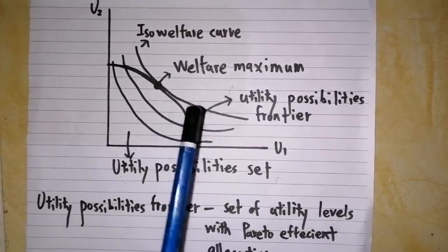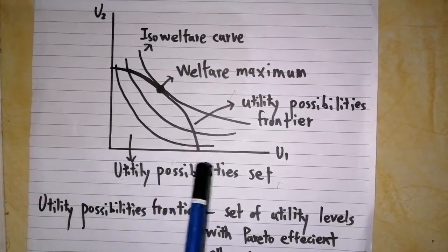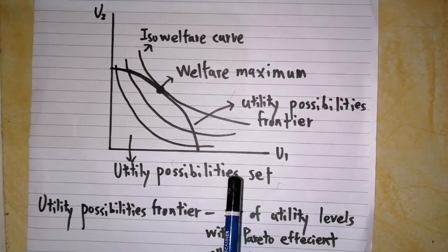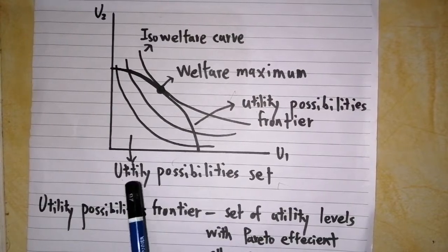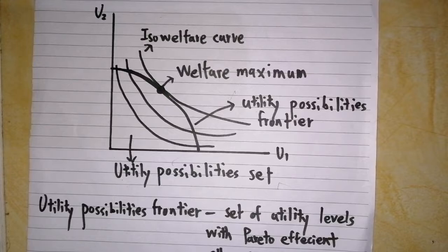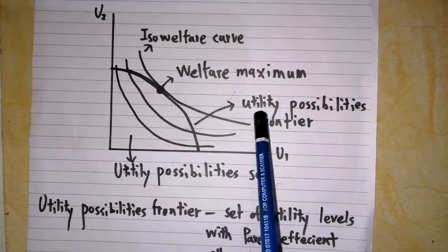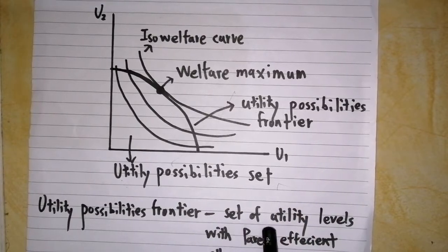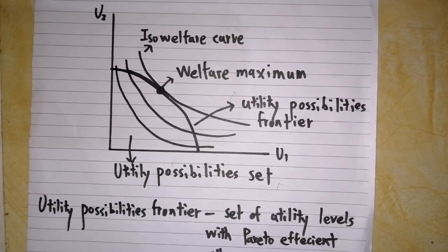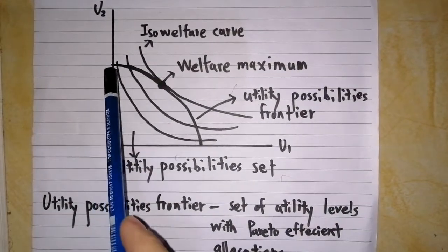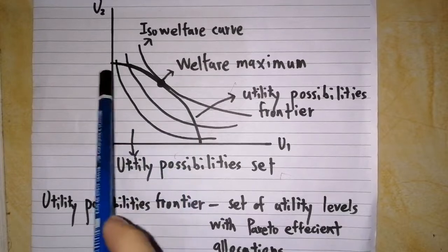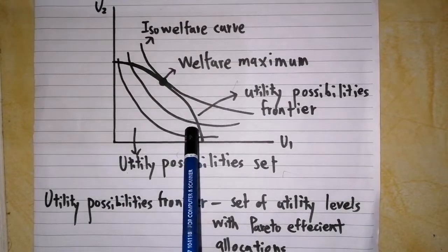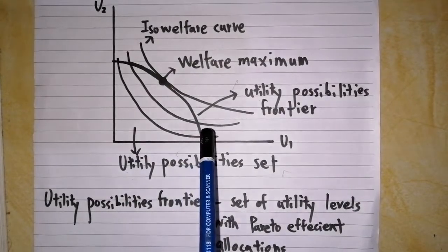This diagram is between two individuals. There are some curves. The first one is utility possibilities set, which is the set of possible utilities in the case of two individuals. The boundary of this set is known as utility possibilities frontier. It's the set of utility levels with Pareto efficient allocations. In other words, every point on this boundary is associated with Pareto efficient allocation.